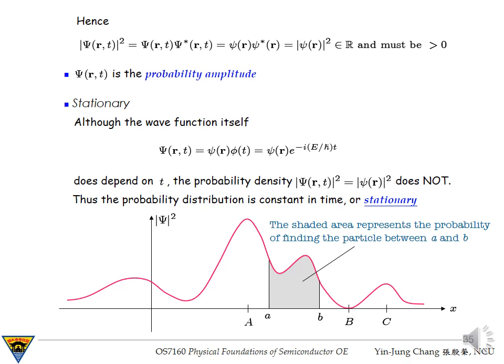the expression for probability density can be rewritten as shown here, where now we see that it is solely determined by the spatial part of the total wave function, and it is always a real and positive number.